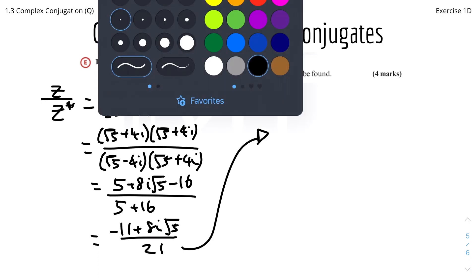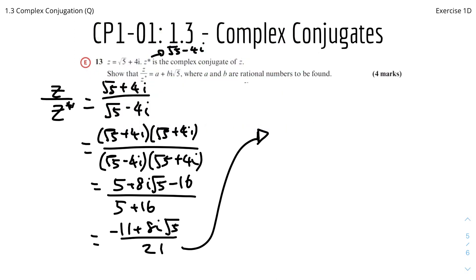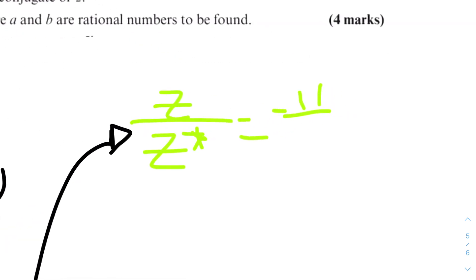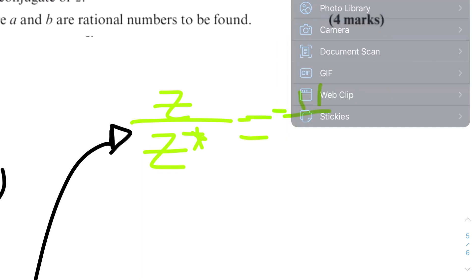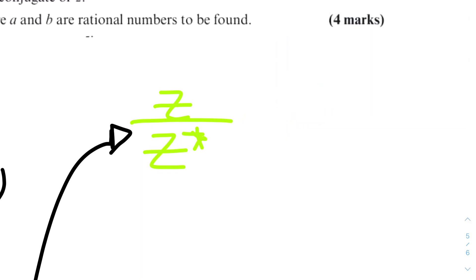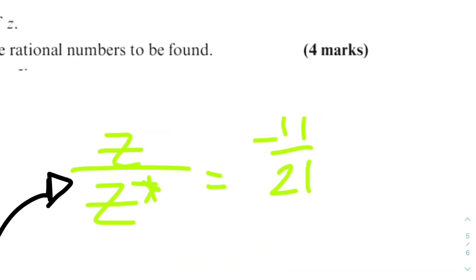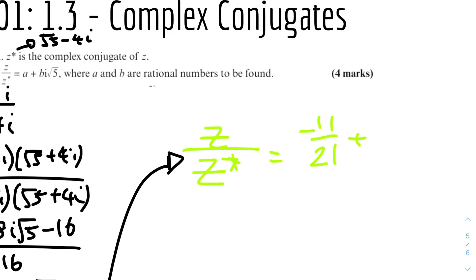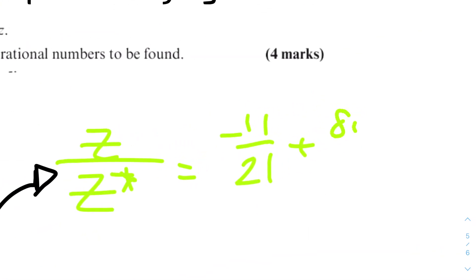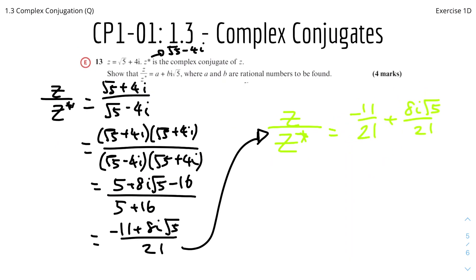We can express z / z* by splitting into real and imaginary parts. The real part a = -11/21, and the imaginary part is 8i√5 / 21. So z / z* = -11/21 + (8/21)i√5, and that's the answer.